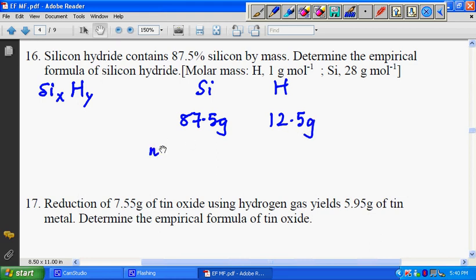If you find the number of moles, 87.5 divided by, what's the molar mass of silicon? It's 28. You get 3.125 moles. And this one, the number of moles is 12.5 moles because you divide by 1.